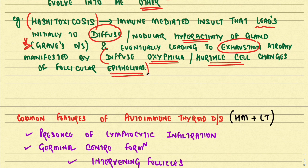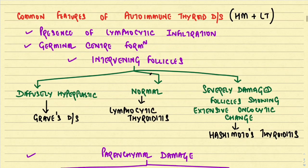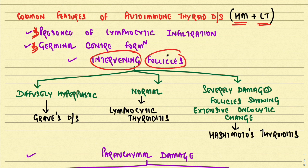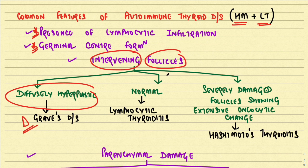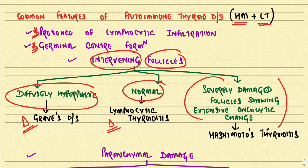Hurthle cell change will be discussed later. The common features of autoimmune thyroid disease — Hashimoto's and lymphocytic thyroiditis — are lymphocytic infiltration and germinal center formation. If the intervening follicles are diffusely hyperplastic, diagnose Graves' disease. If they are completely normal, diagnose lymphocytic thyroiditis. If they show extensive oncocytic change with severe damage, diagnose Hashimoto's thyroiditis.